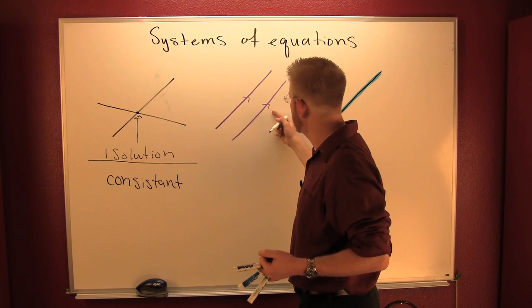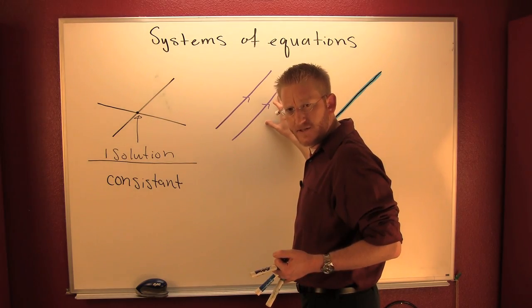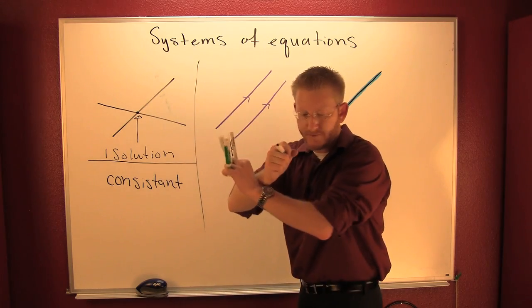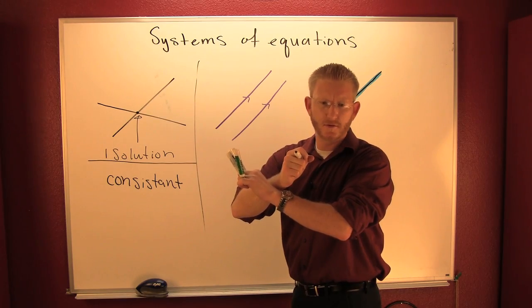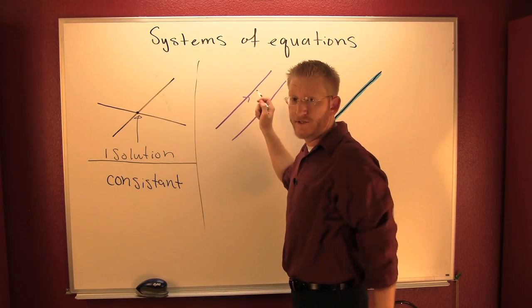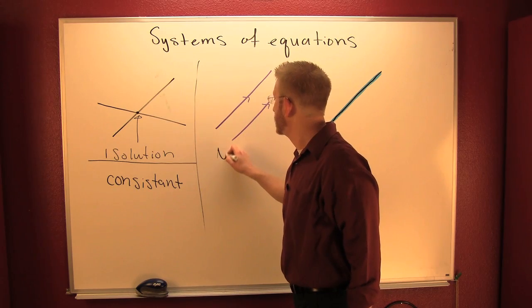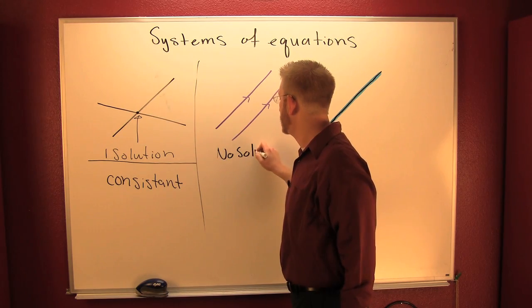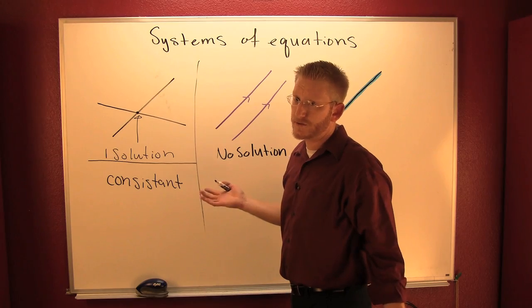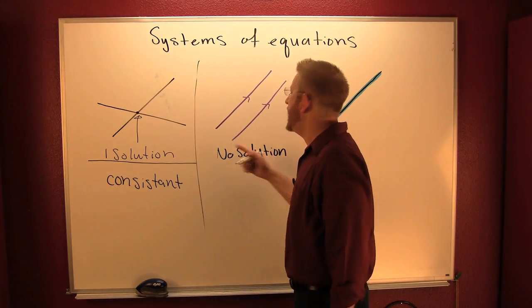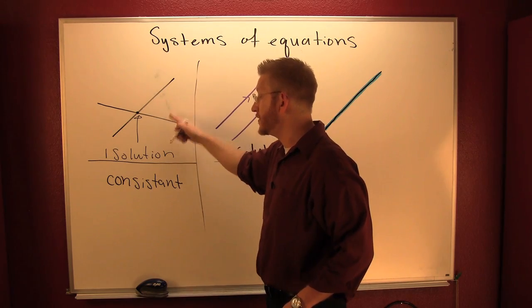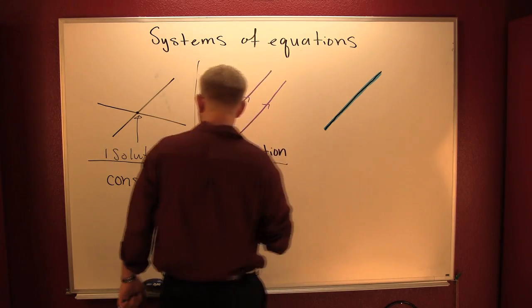My second interaction: do these two lines ever intersect? No. There's no point of agreement — they're never at the same spot at the same time. So these guys never intersect, so there is no solution. If two lines never intersect, there's no solution; they're never going to agree. If a system has no solution, it's called inconsistent.